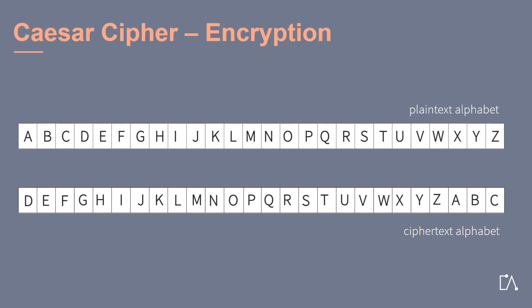Note that while Caesar preferred a shift by three spaces, theoretically different substitution ciphers following the same principle are possible. Moreover, we can be more specific in our description of the substitution cipher. Namely, it is a monoalphabetic substitution cipher. This means that every letter in the plaintext alphabet is substituted by exactly one letter in the ciphertext alphabet and vice versa. If one plaintext character is substituted by several different ciphertext characters, we would call it a polyalphabetic substitution cipher.